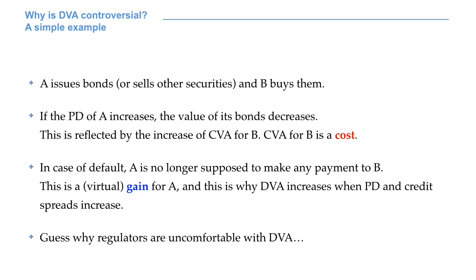A issues bonds and B buys them. If the probability of default of A increases, the value of its bonds decreases. This is naturally reflected by the increase of CVA for B, so that CVA for B is a cost. But for A, default may not be a negative event if we just focus our attention on the single transaction, and not on A as a whole. In fact, in case of default, A is no longer supposed to make any payment to B. This is a virtual gain for A, and this is why DVA increases when the probability of default and credit spreads increase. Taking into consideration its own default, A creates virtual profits.